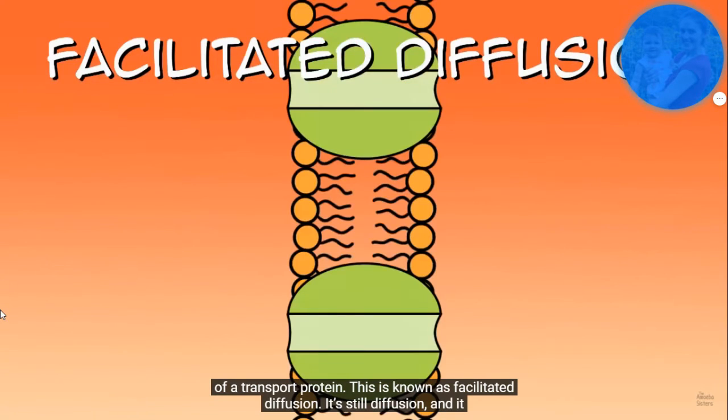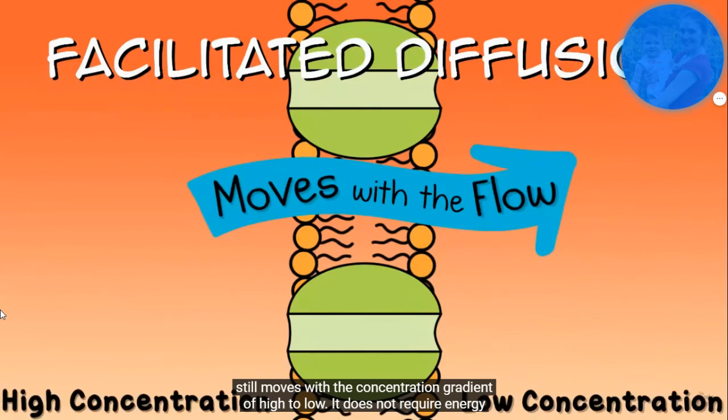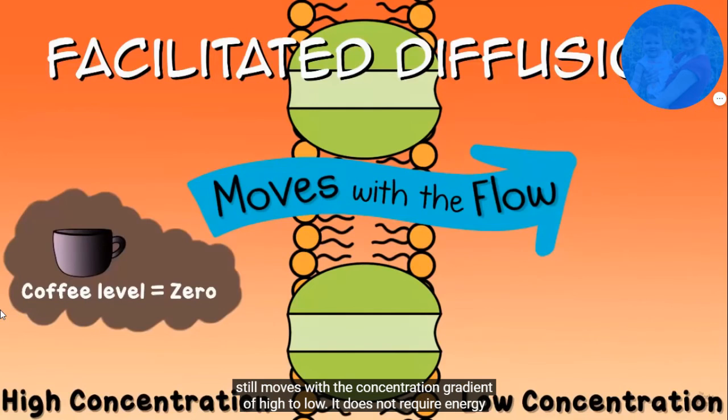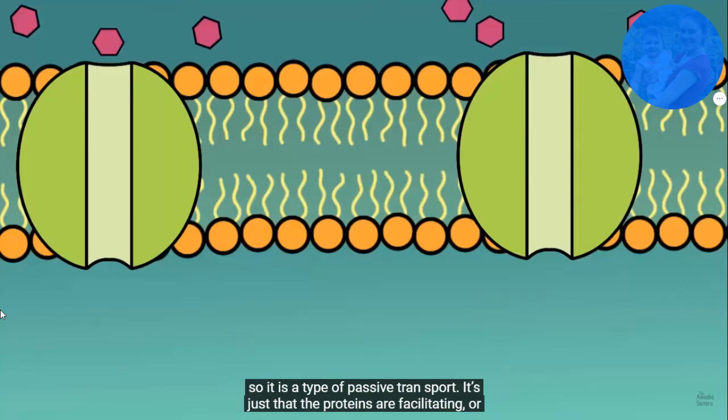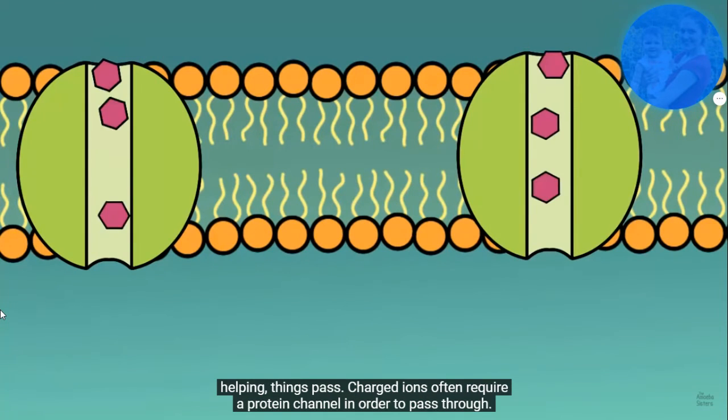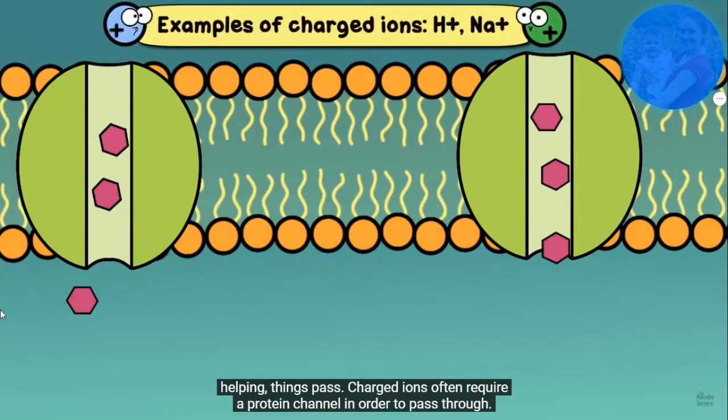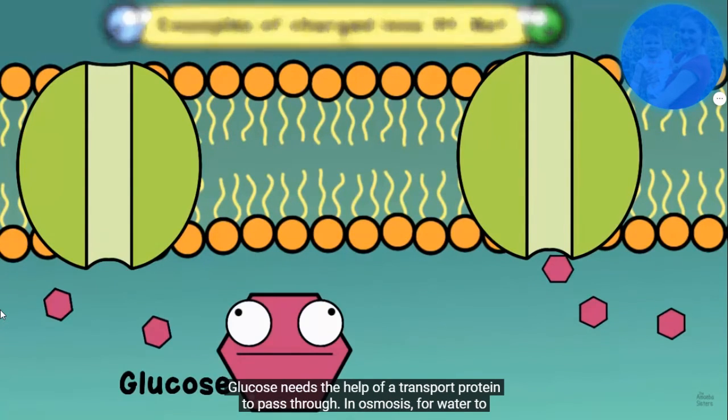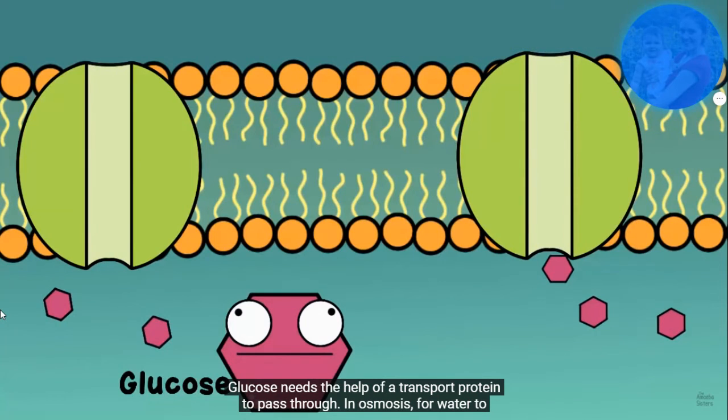This is known as facilitated diffusion. It's still diffusion, and it still moves with the concentration gradient of high to low. It doesn't require energy, though, so it's also a type of passive transport. It's just the proteins are facilitating or helping things pass. Charged ions often require a protein channel in order to pass through. Glucose needs the help of a transport protein to pass through.